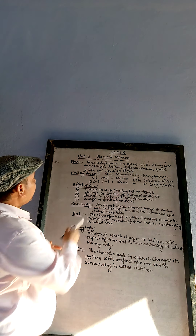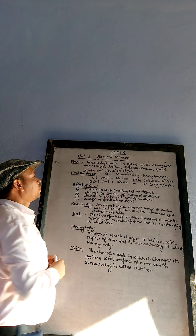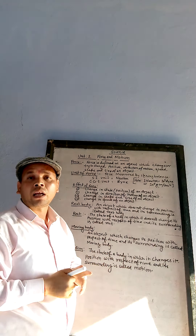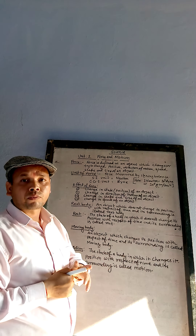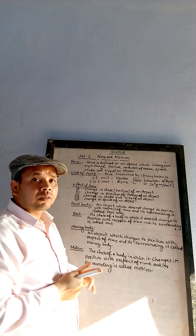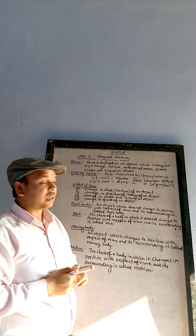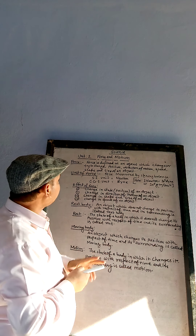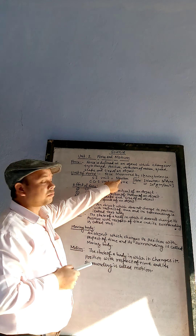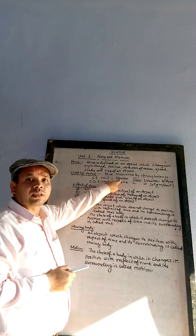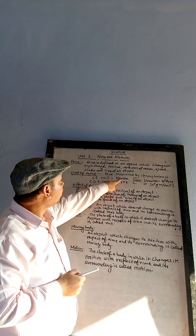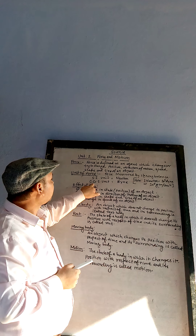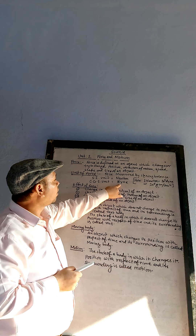The second heading is unit of force. As you have read, force is equivalent to weight and force is measured by spring balance. Its SI unit is Newton, and in the CGS system, its CGS unit is dyne.